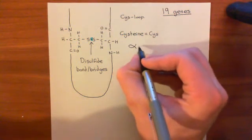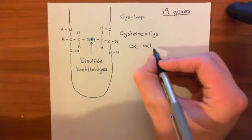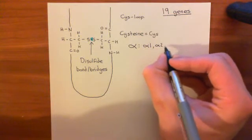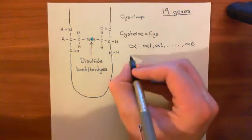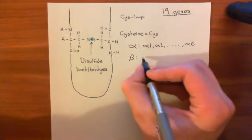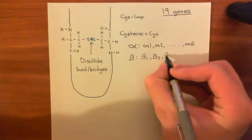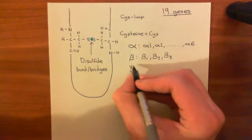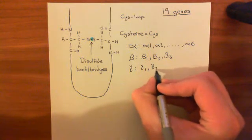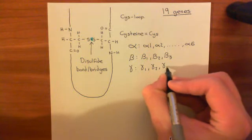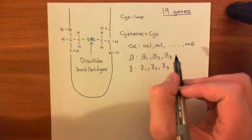We have the alpha family of GABA-A receptor subunits, which contains six members - the alpha-1 subunit, the alpha-2 subunit, all the way up to the alpha-6 subunit. Then we have the beta family of GABA-A receptor subunits, which contains beta-1, beta-2, and beta-3. Then we have the gamma family of subunits, which contains gamma-1, gamma-2, and gamma-3. So far, we've got 12, so we've still got seven to go.